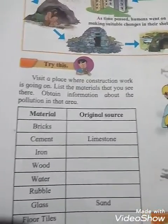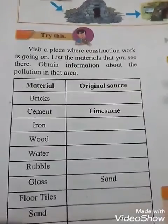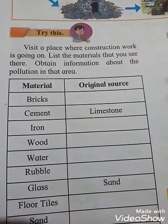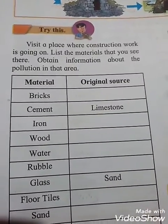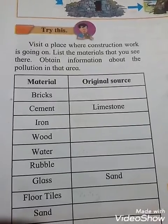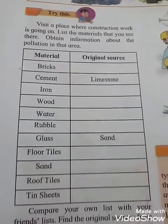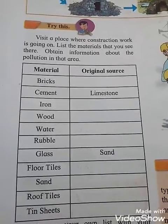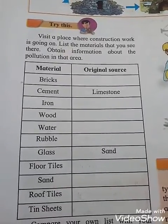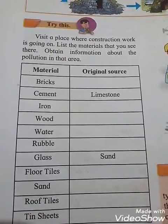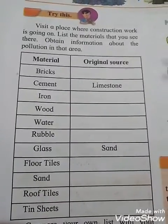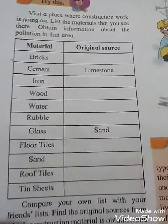Try this activity: visit a place where construction work is going on, list the materials you see there, and obtain information about pollution in that area. This is totally activity-based. For example, if the material is cement, the original source is limestone; if the material is glass, the original source is sand.